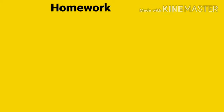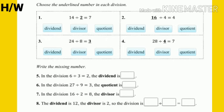Now it is your homework time. You will do the homework in your copy. So this is your homework. First one is choose the underlined number in each division. You have to say whether it is a dividend, divisor or quotient. The underlined number. And the next one is write the missing number. You have to do in your copy.